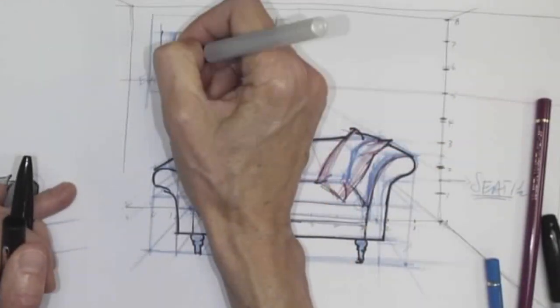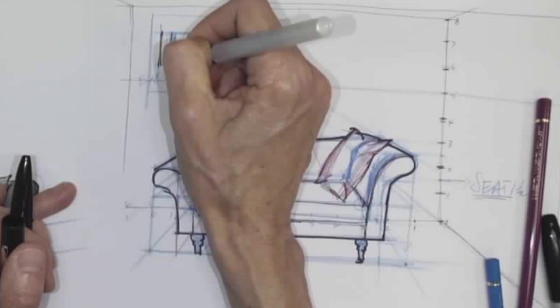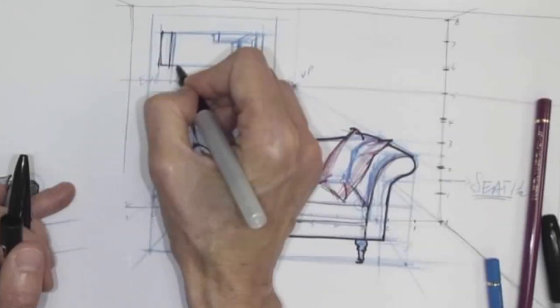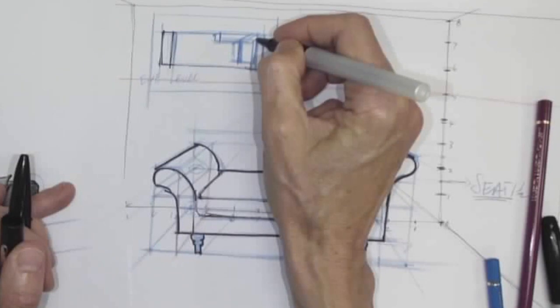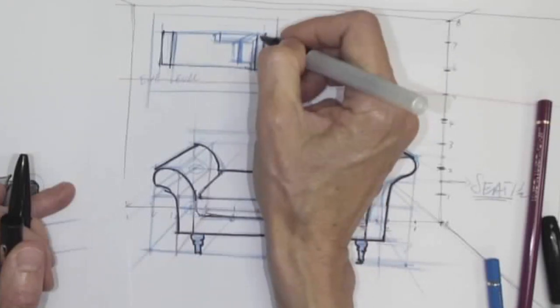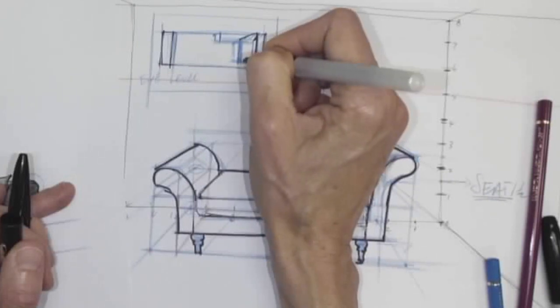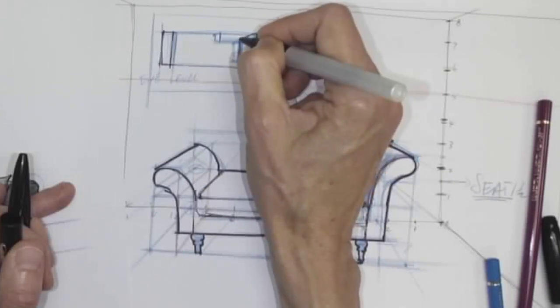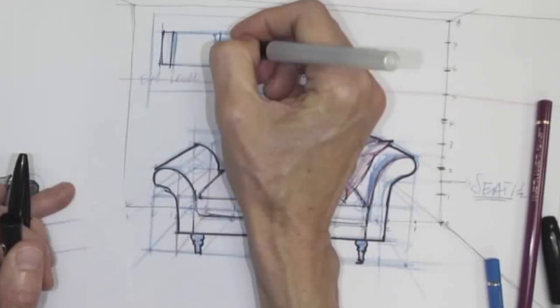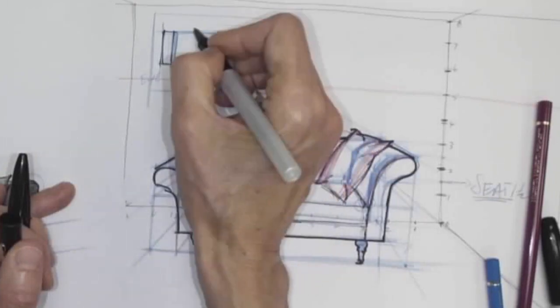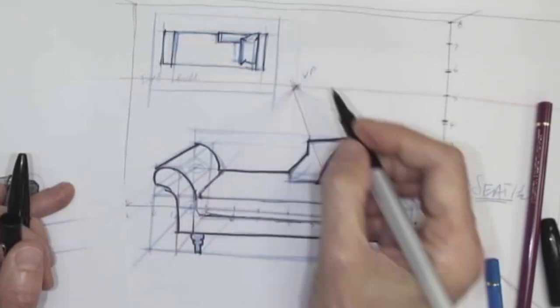This is encroaching on our cushion and our floor plan. We want to refine that with our black pen. The depth for our seat. We're going to wrap it up here.